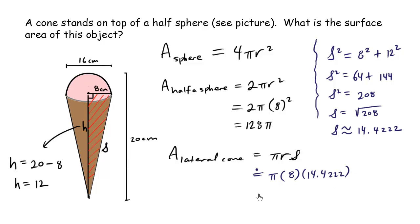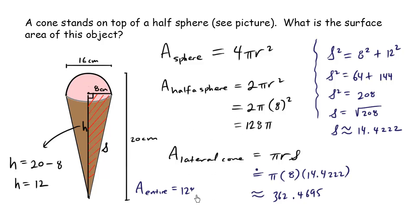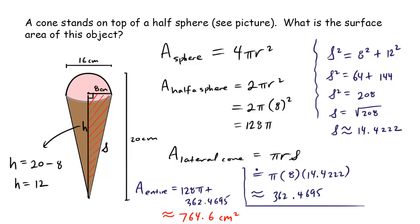Using our calculator, the lateral cone area equals πrs = π × 8 × 14.4222, which is approximately 362.4695. So the total surface area of the entire object equals the area of the half sphere — 128π — plus the lateral cone area of 362.4695, which is approximately 764.6 centimeters squared.